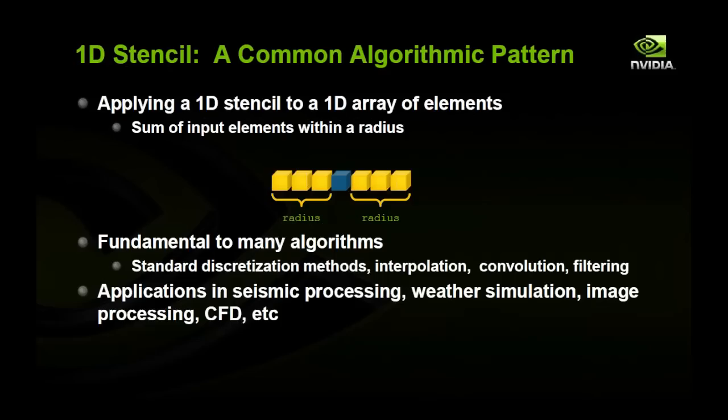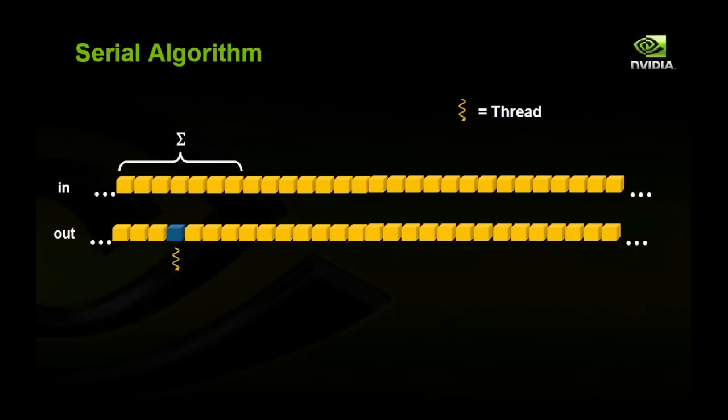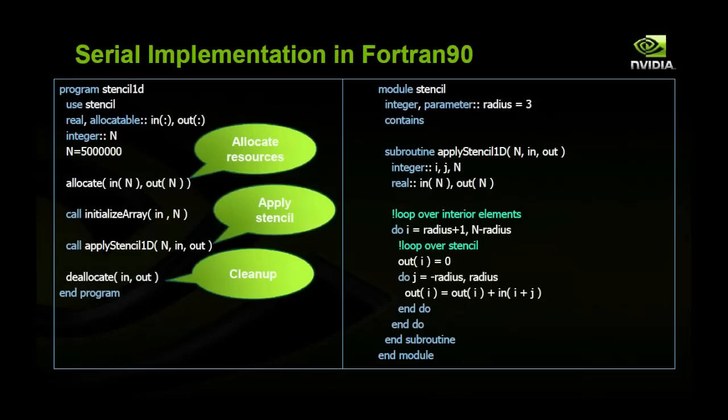To start, let's look at the serial algorithm. We're going to be summing over seven elements in this case. Here I have an input array and an output array. I've marked the elements that we're going to be summing over and highlighted the element that we're going to be writing to. As the algorithm moves forward, it will grab each value from the input array and sum them into the output array. This repeats for every element — that is the serial algorithm.